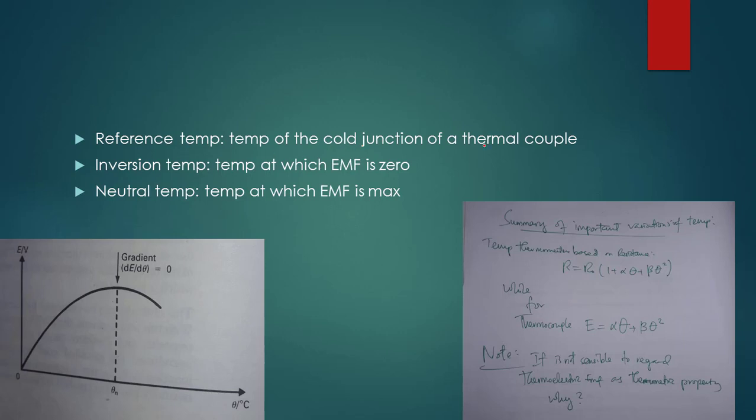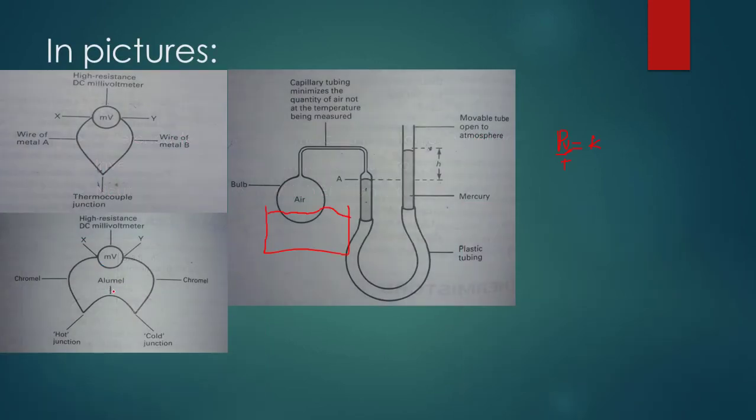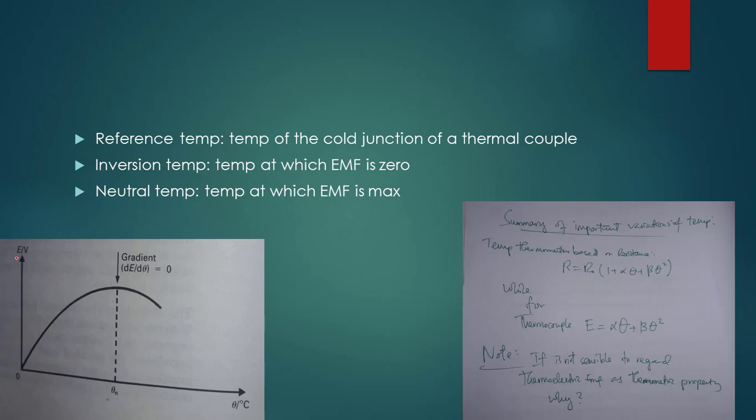For the thermocouple, the reference temperature is at the cold junction, which should be maintained. At the hot junction you can either have inversion temperature or neutral temperature. Inversion temperature is the temperature at which EMF is zero. Neutral temperature is the temperature at which EMF is maximum. If we plot a graph of potential difference versus temperature, you get a curve like a parabola.